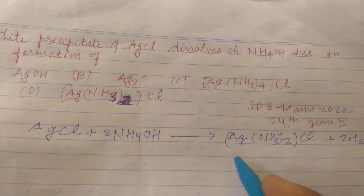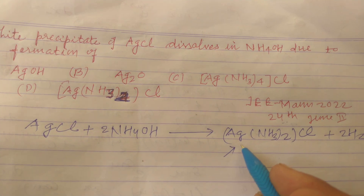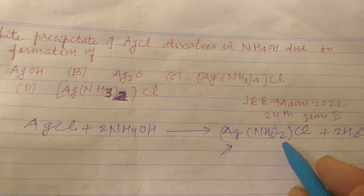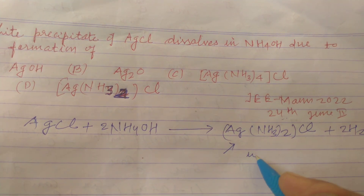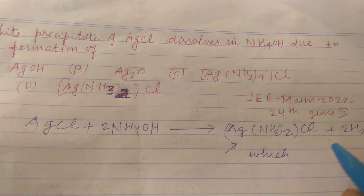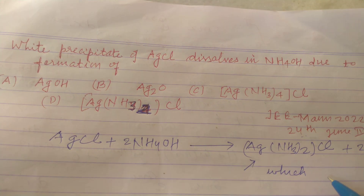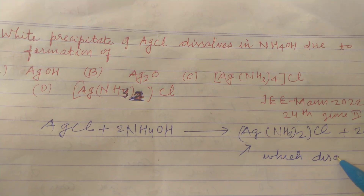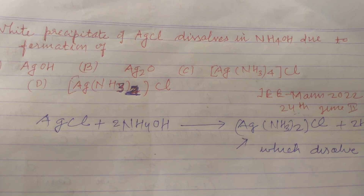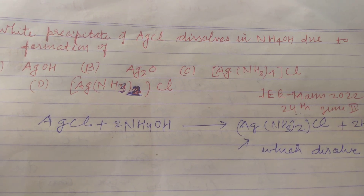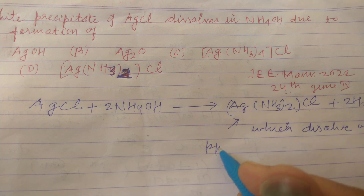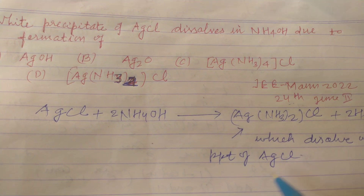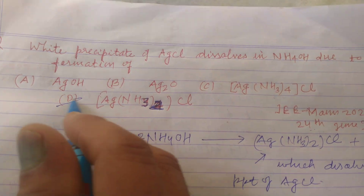So here a complex substance [Ag(NH3)2]Cl is formed, which dissolves the white precipitate of AgCl. So the answer to this question will be D.